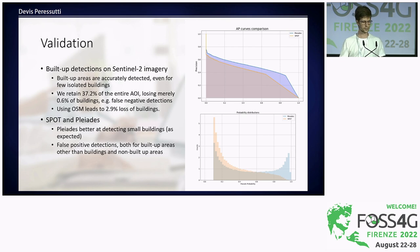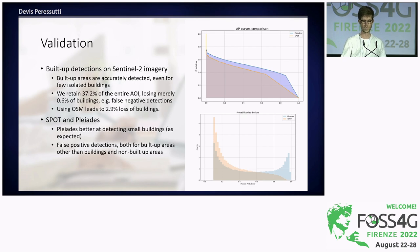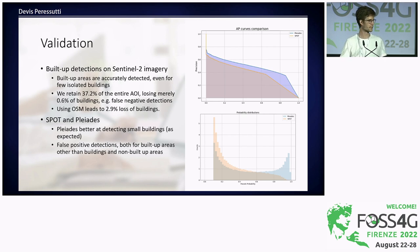We also validated the Spot and Pleiades predictions. The main takeaways were that Pleiades is much better at detecting smaller buildings, as expected, because of the higher spatial resolution. The model confidence distribution for Pleiades is also much higher. However, one problem we faced was false positive detections: because the limited Spot and Pleiades imagery was focused on built-up areas, the model didn't see many areas without buildings, leading to false positives in both built-up and non-built-up areas.